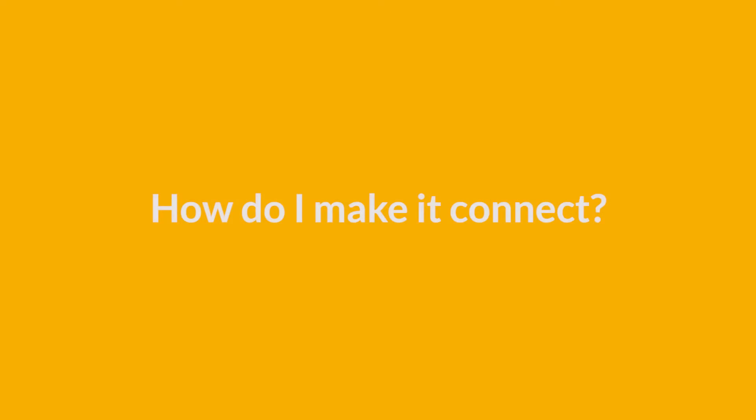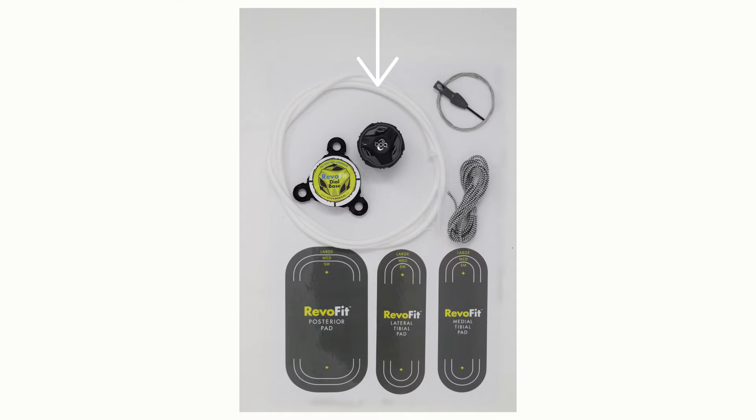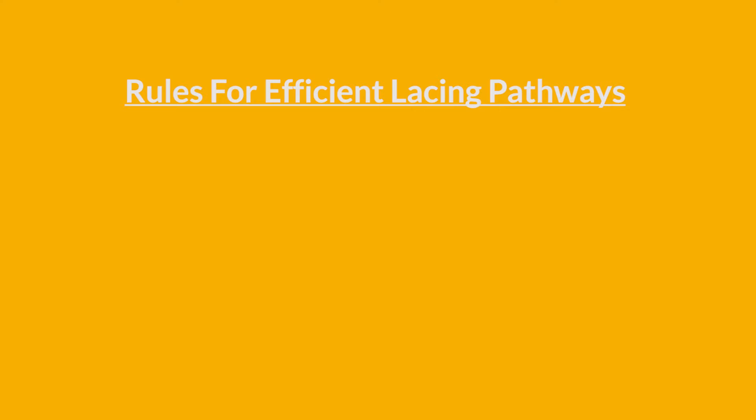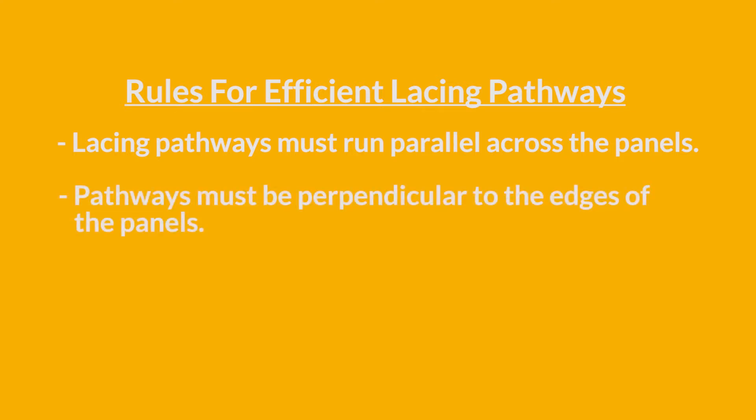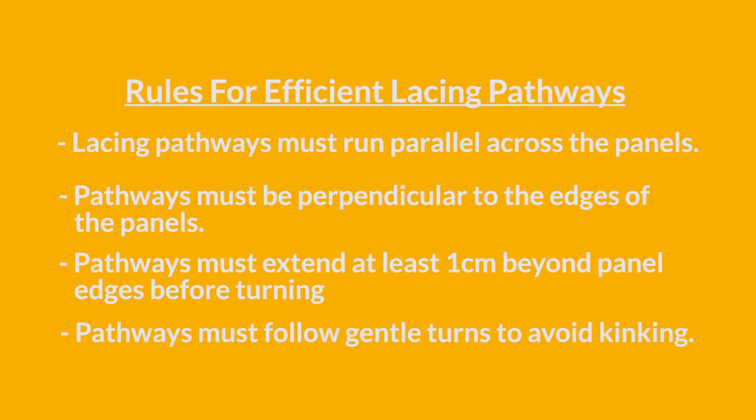How do I make it connect? To connect the panels and the dial, you will use the tubing that comes in your check socket kit. Again, as we discussed in our socket design course, there are a few rules to follow to ensure efficient adjusting. The lacing pathways must run parallel across the panels, perpendicular to the edges of the panels, extend 1 cm beyond the panel edges before turning, and follow gentle turns to avoid kinking the tubing.